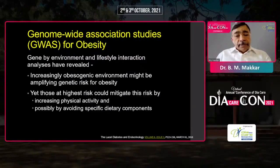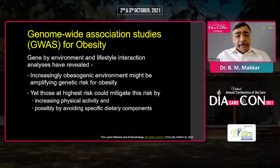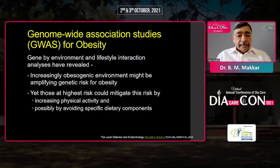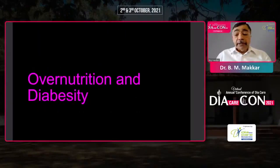Studies which looked at gene-by-environment or lifestyle interactions have clearly shown that the increasingly obesogenic environment is amplifying the genetic risk for obesity. Within this environment, those who are at higher risk can mitigate this risk by increasing physical activity and avoiding specific dietary components.